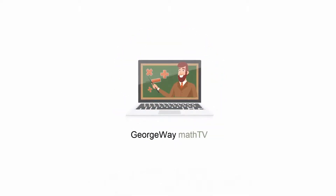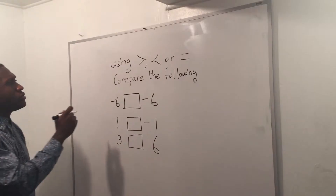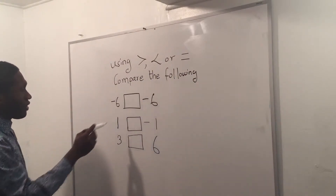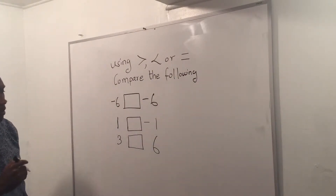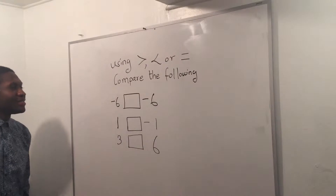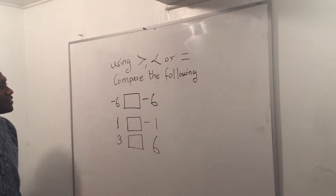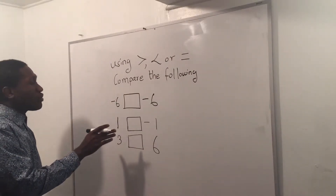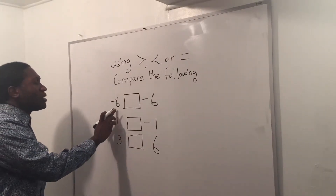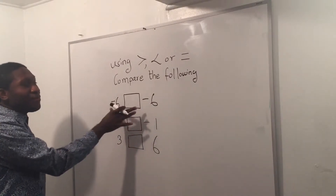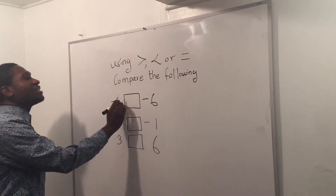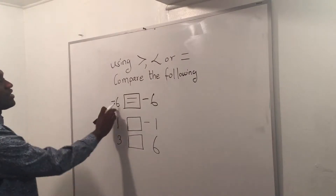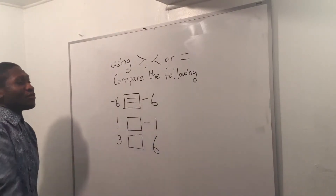Welcome to Georgia Math TV. Use these signs to compare the following. When the numbers are the same, I just have to use an equal sign. Negative six and negative six are the same, so I use the equal sign.